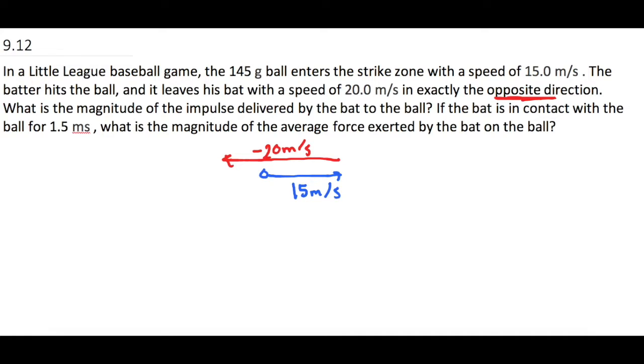So, now that we know what's going on, let's make a list of what we know. We have the mass of the ball is 145 grams, and let's put that in standard units right away. So if we move the decimal one, two, three places, we have 0.145 kilograms. Now we know the initial velocity is 15 meters per second, and the final velocity is negative 20 meters per second.